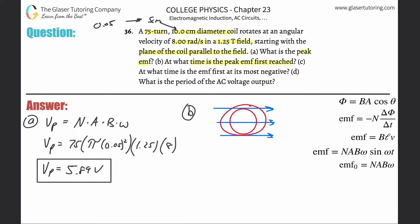So at this starting position, there is no flux through the coil. According to the flux formula, Φ = B × A × cos(θ), where θ is the angle between the normal of the area and the magnetic field. Here the normal is perpendicular to B, creating a 90-degree angle. Cosine of 90 is zero, so the whole thing goes to zero.